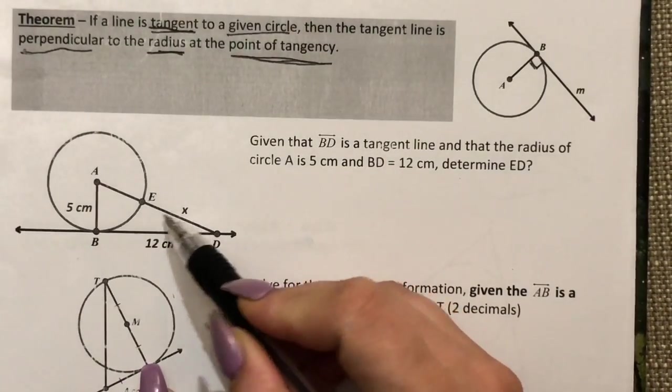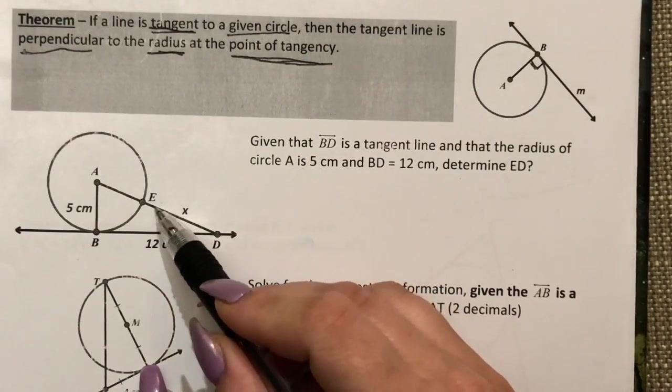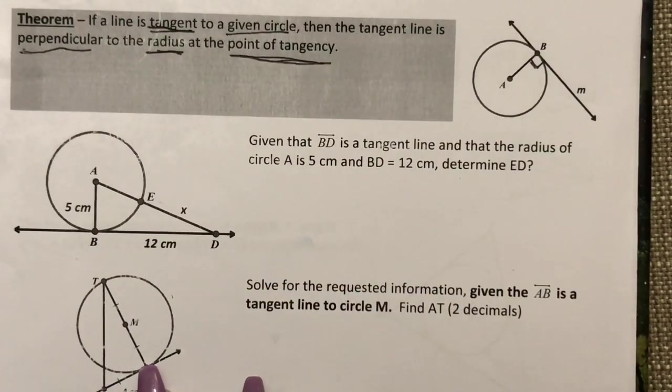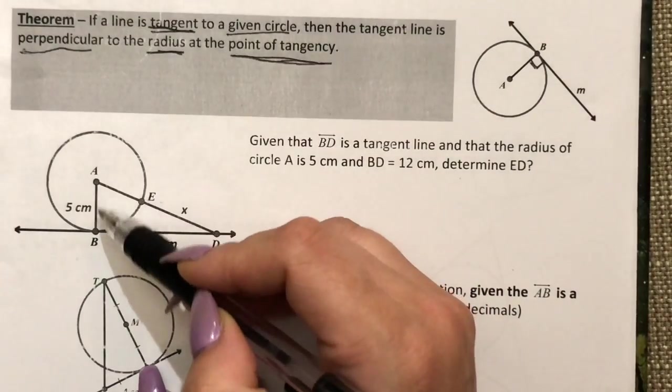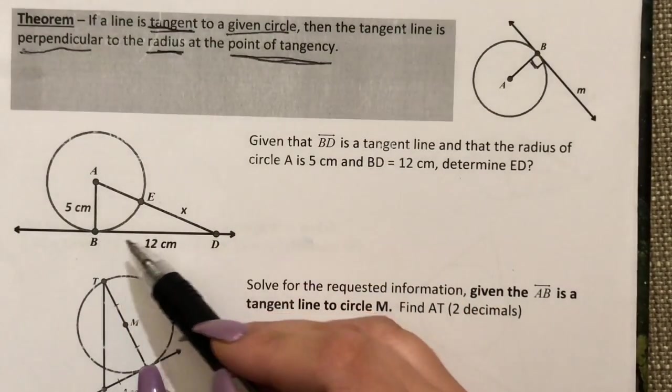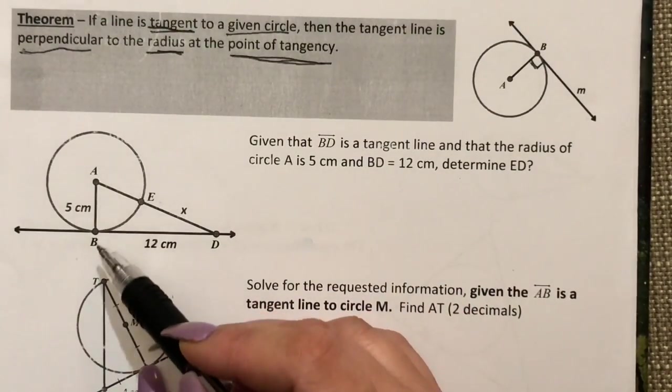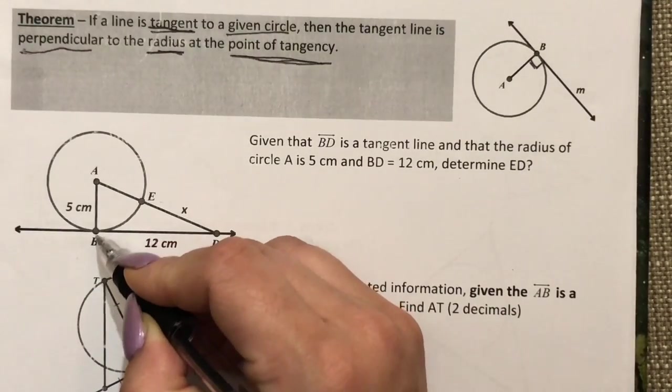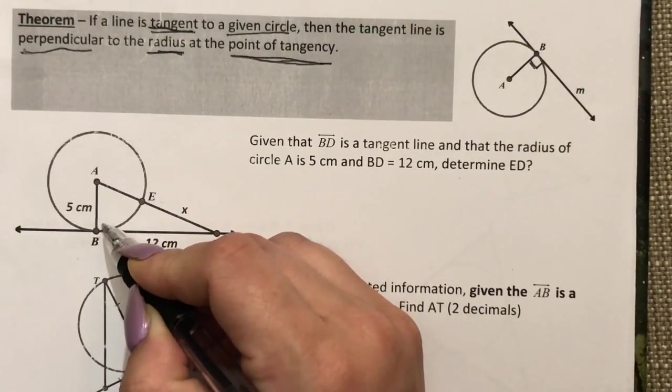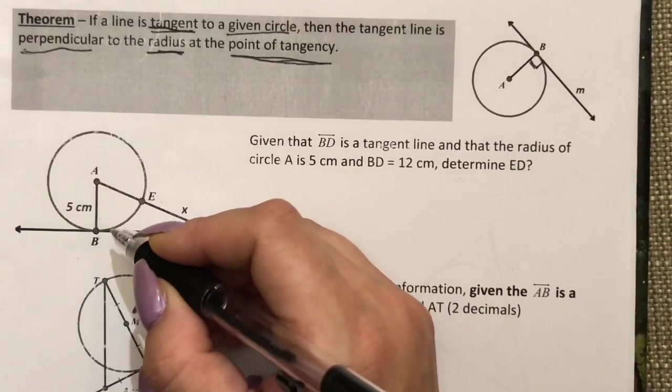So ED is this section right here that's labeled by X. As I can see I have my radius here, I have my tangent line both of which are already labeled, and I know that at my radius and my point of tangency it's going to create a 90 degree angle.